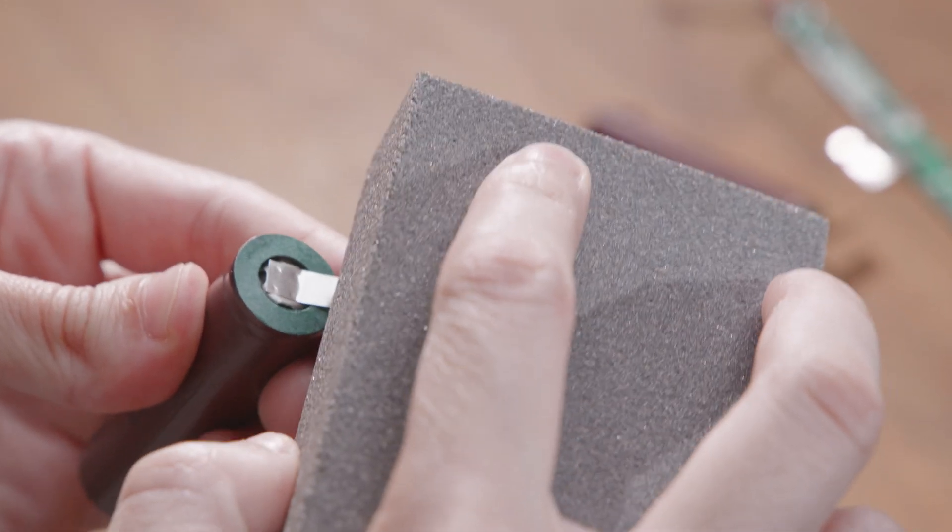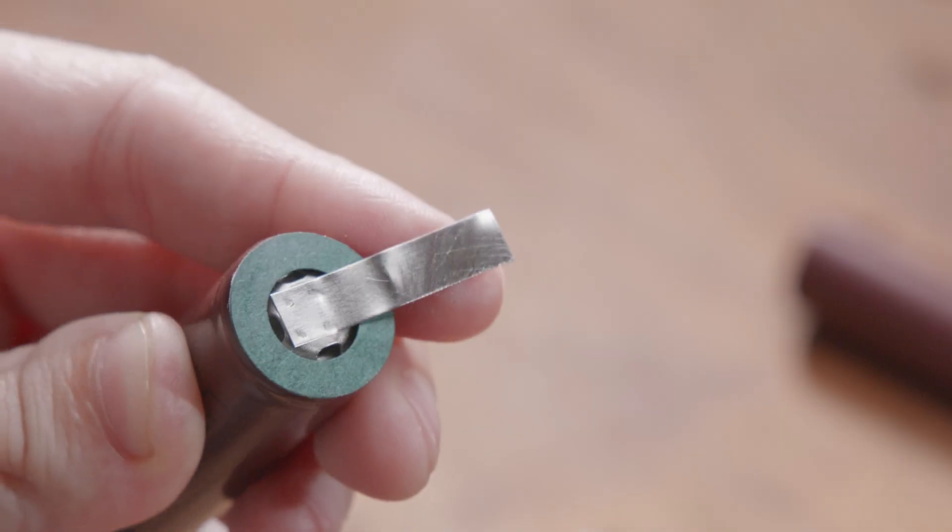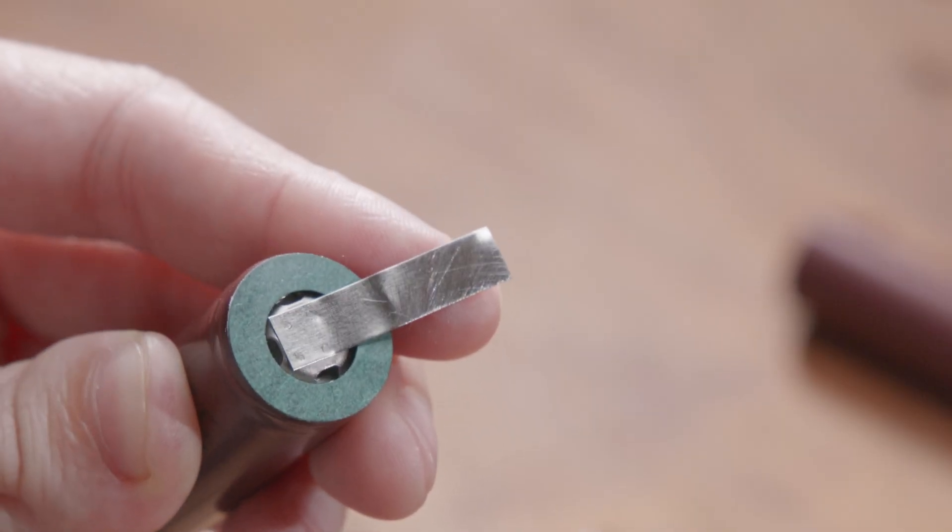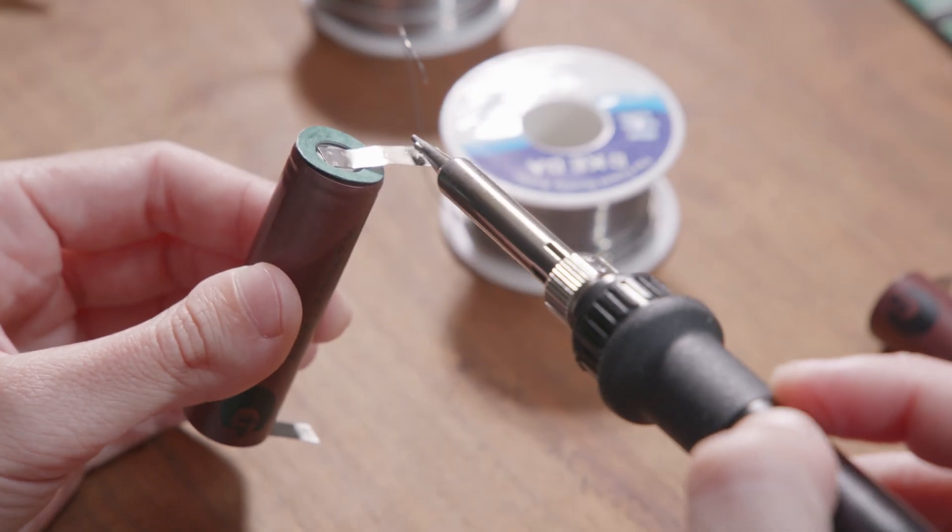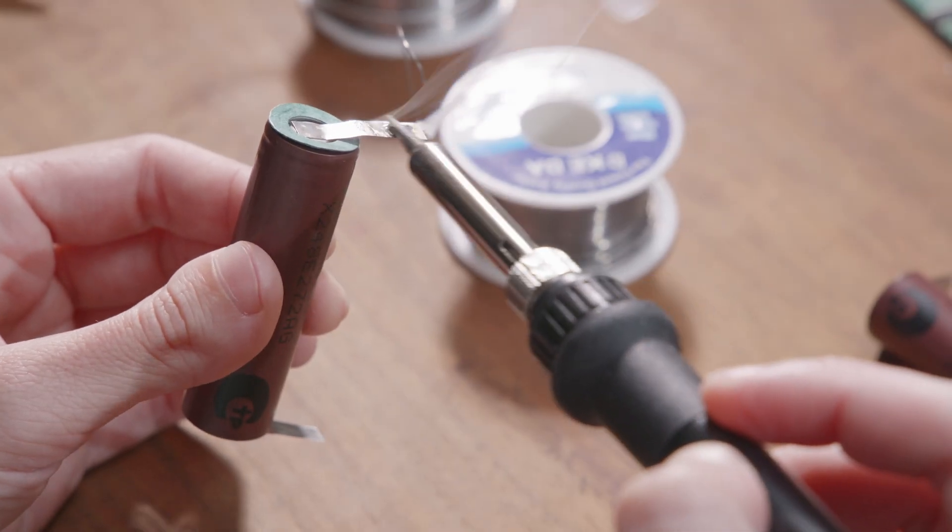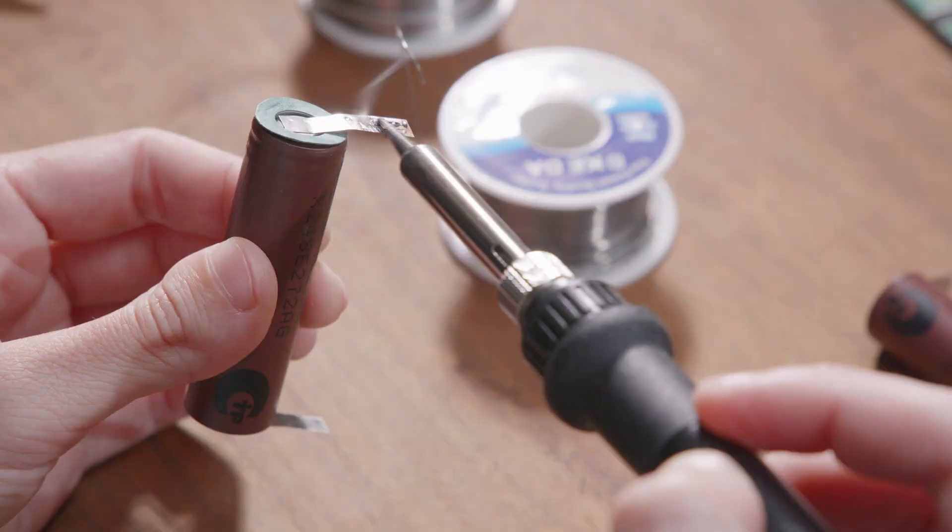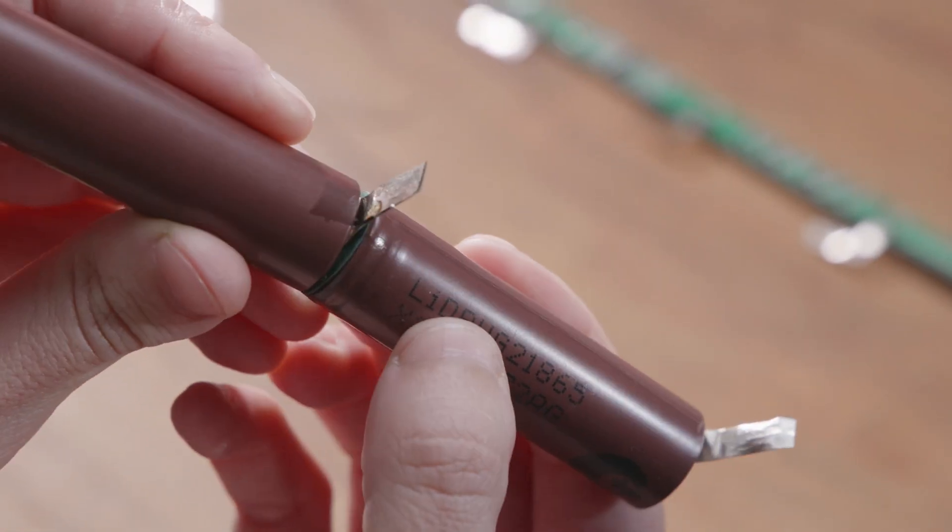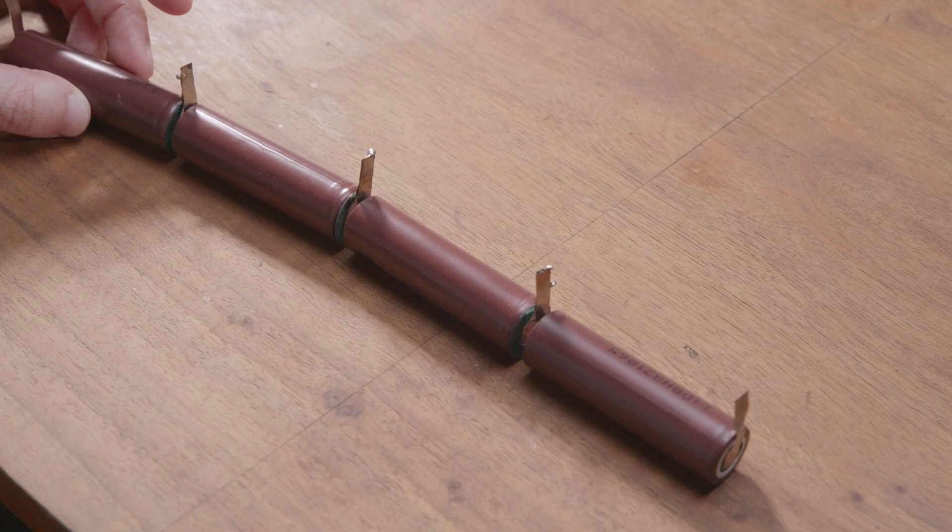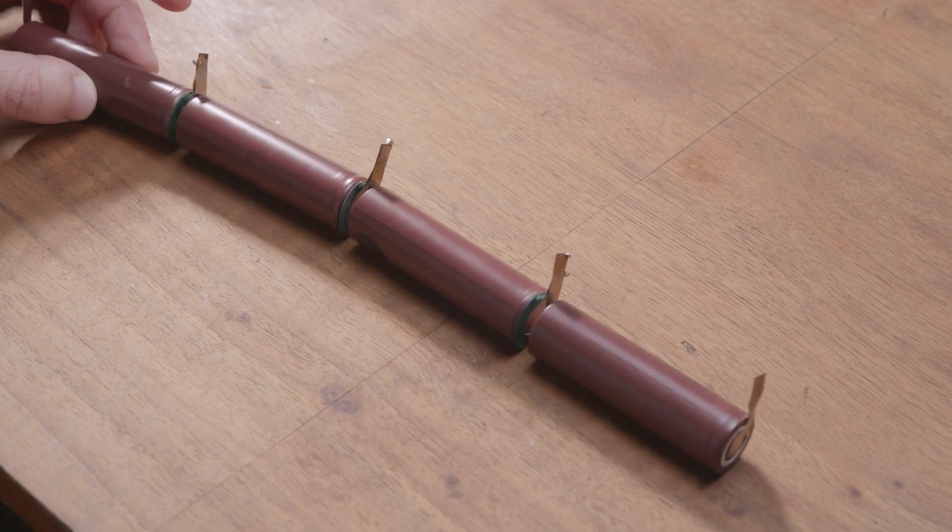Before soldering, scratch the contact surface to help the solder stick. Start by applying some solder to the contact points. Then daisy-chain the batteries. If you are soldering directly to the batteries, be very careful. Overheating them is dangerous.